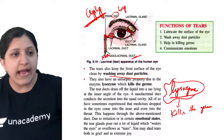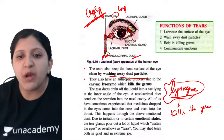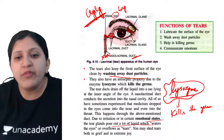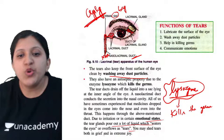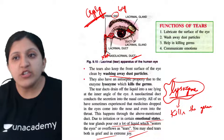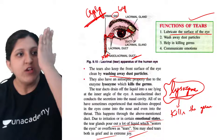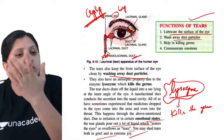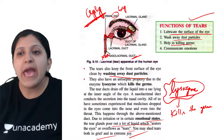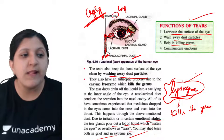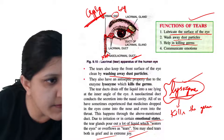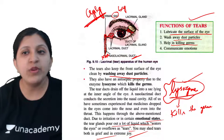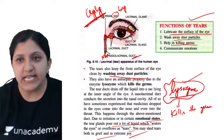Due to irritation or emotional state, the tear gland pours a lot of liquid, resulting in watery eyes or overflow as tears. You shed tears both in grief and in joy. The functions of tears are: to lubricate the surface of the eye, wash away dust particles, kill germs through lysozyme, and communicate or express emotions.